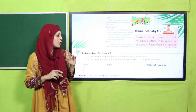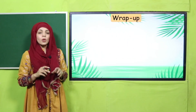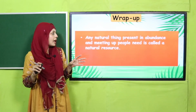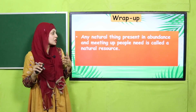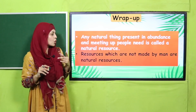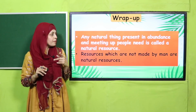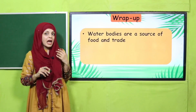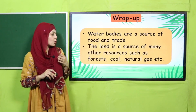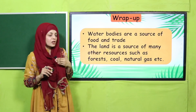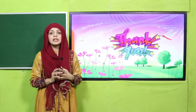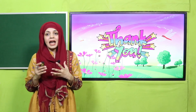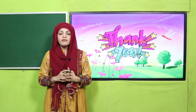Let's wrap up the lesson. We have finished lesson number three. Today we discussed that any natural thing present in abundance and meeting up what people need is called a natural resource. Resources which are not made by man are natural resources. We discussed water and land: water bodies are a source of food and trade, and the land is a source of many other resources such as forests, coal, and natural gas. I hope you have learned a lot and understood water and land as natural resources. Keep everybody around you safe, have a good day, and Allah Hafiz.